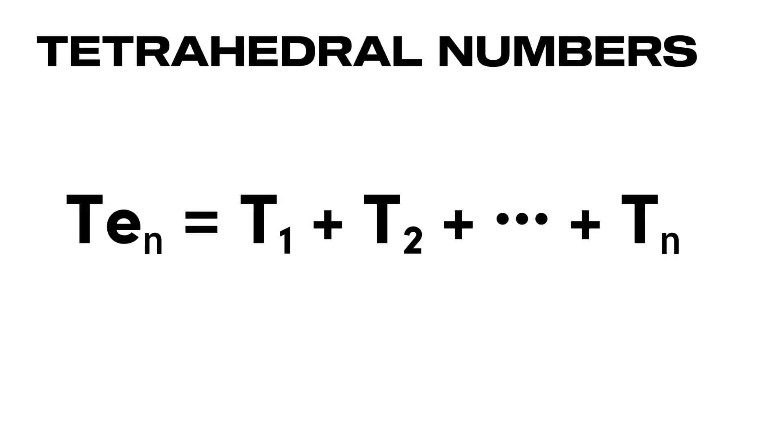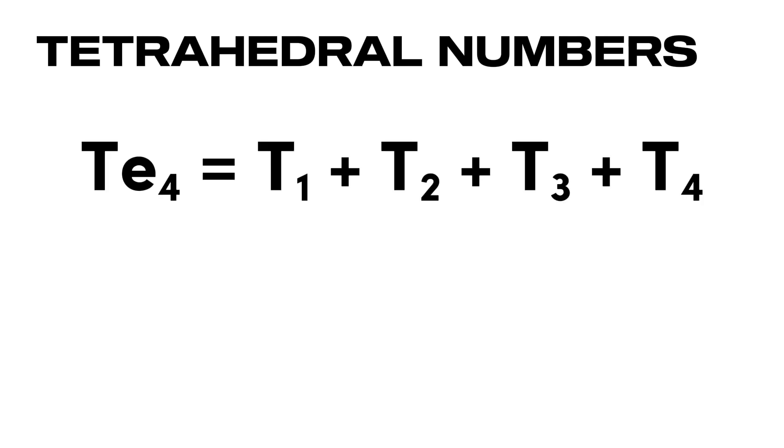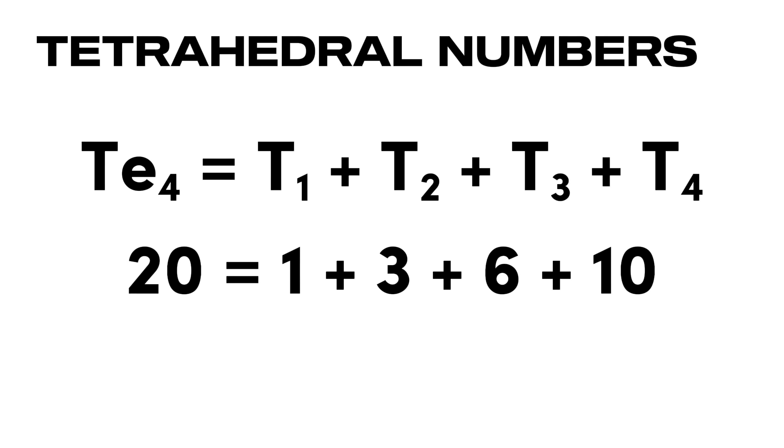It should be noted that the nth tetrahedral number is the sum of the first n triangular numbers, meaning the fourth tetrahedral number, which is 20, is the sum of the first four triangular numbers, 1, 3, 6, and 10.